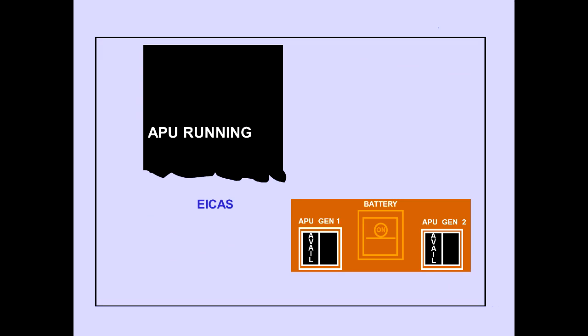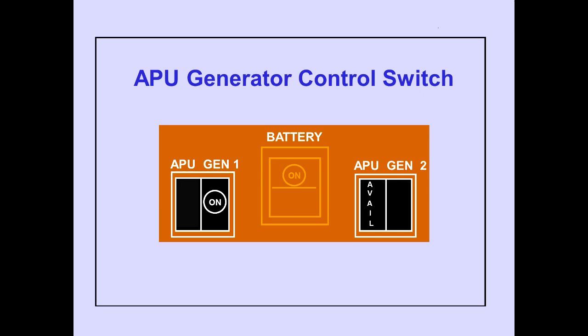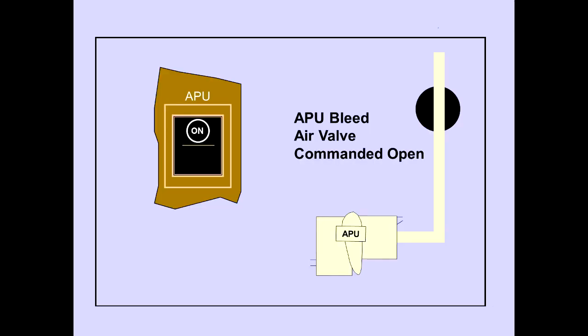When the APU reaches its normal operating speed, the EICAS memo message APU running is displayed. The available lights on the APU generator switches illuminate when electrical power output is within normal limits. Pushing each APU generator control switch on one at a time safely applies APU electrical power to the airplane. It is ATLAS procedure to only select APU generator number one on for pre-flight. This ensures the PDUs, powered drive units, will be powered for cargo loading. With the APU bleed air switch on, the bleed air valve is commanded open and bleed air is available to the airplane.